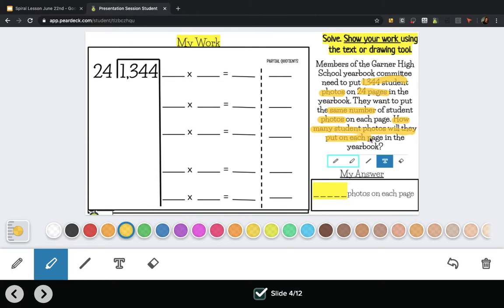Okay, so after I read this a second time, it's always important to reread a problem. I can tell this is going to be a division problem because I have a total of 1,344 photos that have to be put on only 24 pages and we want the exact same number on each page, which reminds me of equal groups.